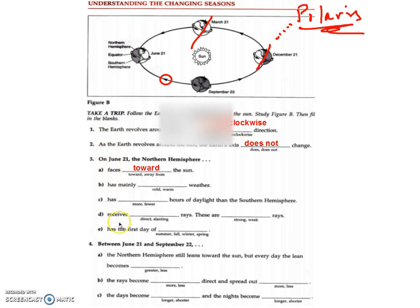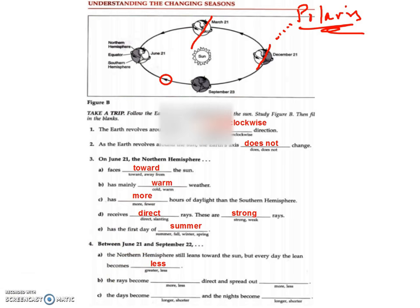On June 21st, the northern hemisphere is facing towards the sun; therefore it's warmer, as it receives more daylight hours and more direct, stronger rays — this marks the first day of summer. As we go from June to September through summer, we are getting fewer daylight hours, the rays are becoming less direct and more spread out, the days are becoming shorter, and the nights are becoming longer. That period is called summer vacation, even though it's getting less and less summery.